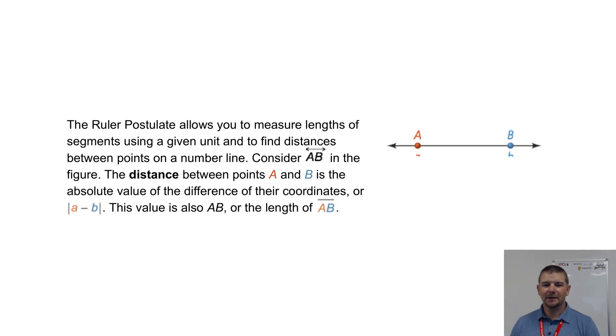Consider line AB in the figure. The distance between points A and B is the absolute value of the difference of their coordinates, or |a - b|. This value is also AB, the length of AB.